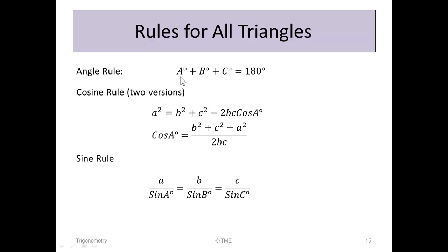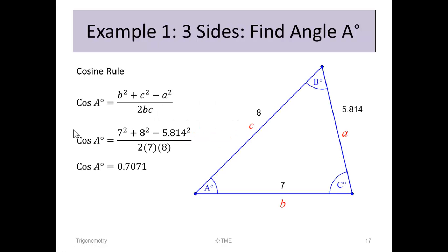Looking at the rule list: the angle rule is out because we don't know any angles. The cosine rule A squared equals B squared plus C squared would only be useful if we didn't know one of the lengths — but we know all three. The second version, cos A equals B squared plus C squared minus A squared over 2BC, looks promising because we know all three side lengths and are looking for an angle. So this second version of the cosine rule is what we'll use.